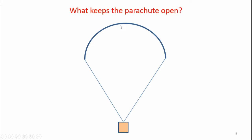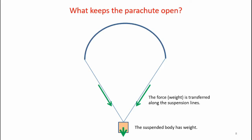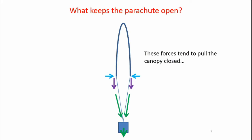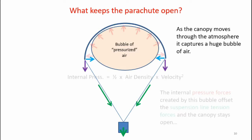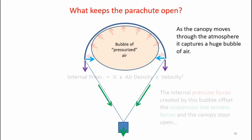What keeps the flexible parachute canopy open? Here's a diagram showing the canopy and the suspension lines that attach the canopy to the suspended body. The suspended body has weight, and that weight is transferred to the suspension lines, which ultimately transfer the loads to the canopy. There are vertical and horizontal force components, and those forces tend to pull the canopy closed. As the parachute moves through the atmosphere, it scoops up a bubble of pressurized air. That air pressure is known as the internal pressure or dynamic pressure — one half air density times velocity squared — and it's this internal pressure force that pushes the canopy open and keeps it open during descent.